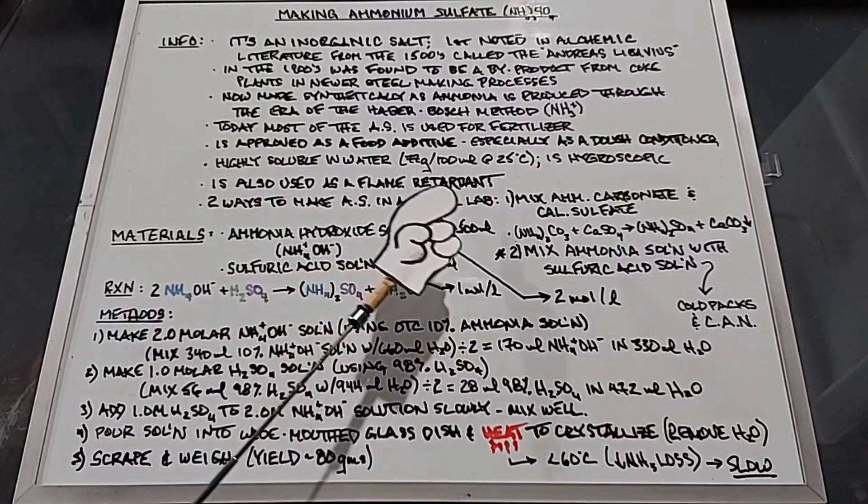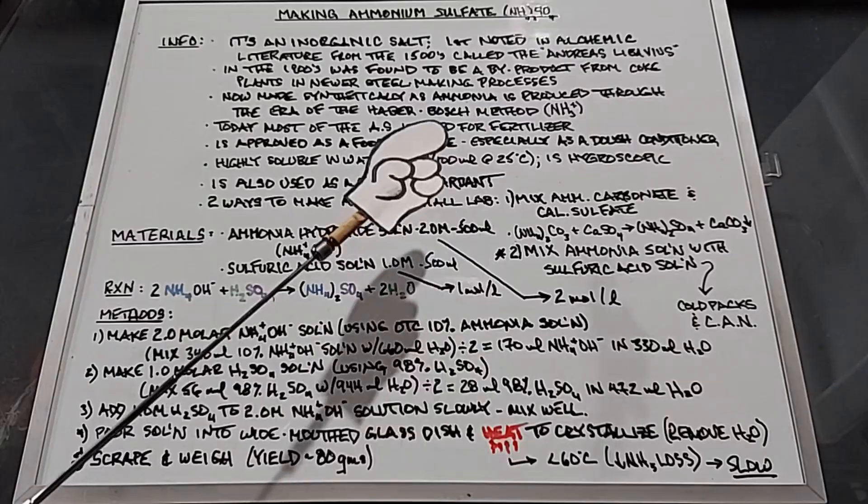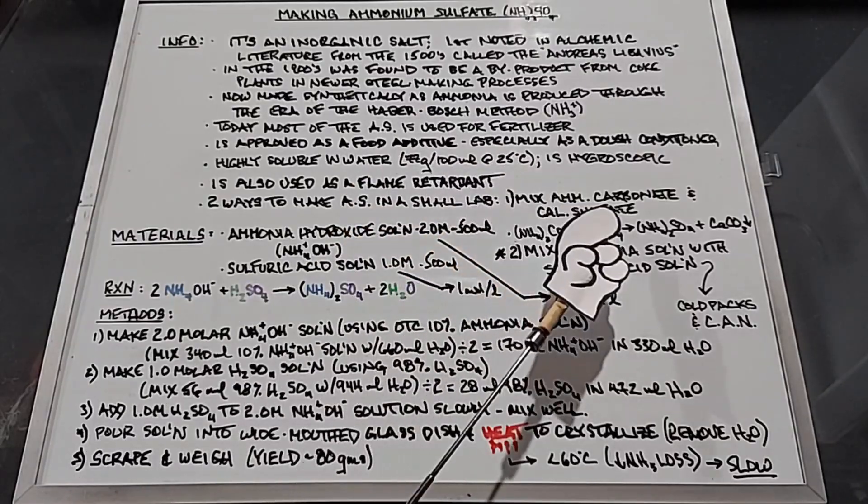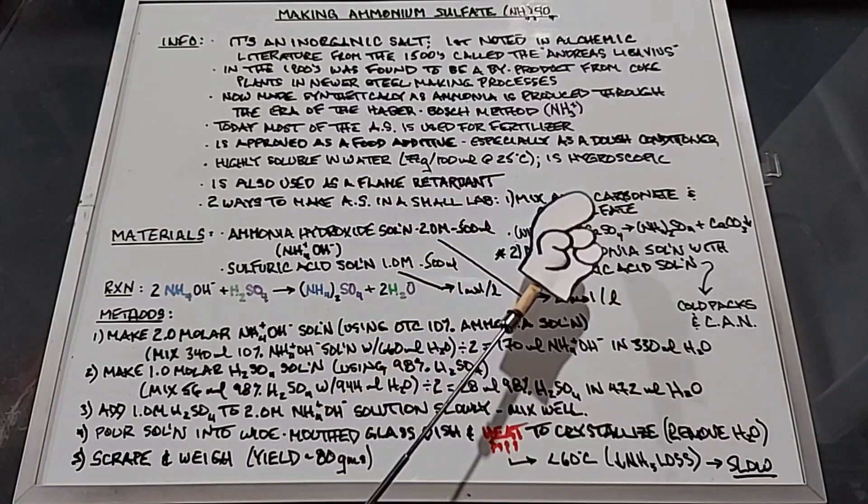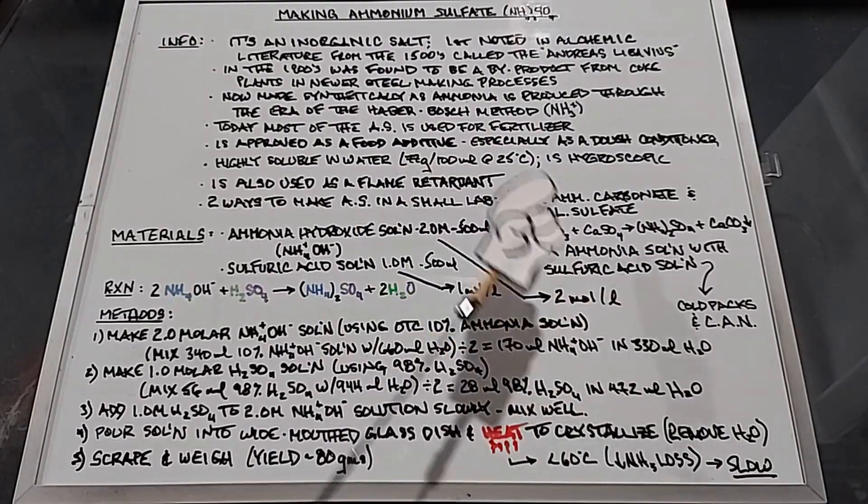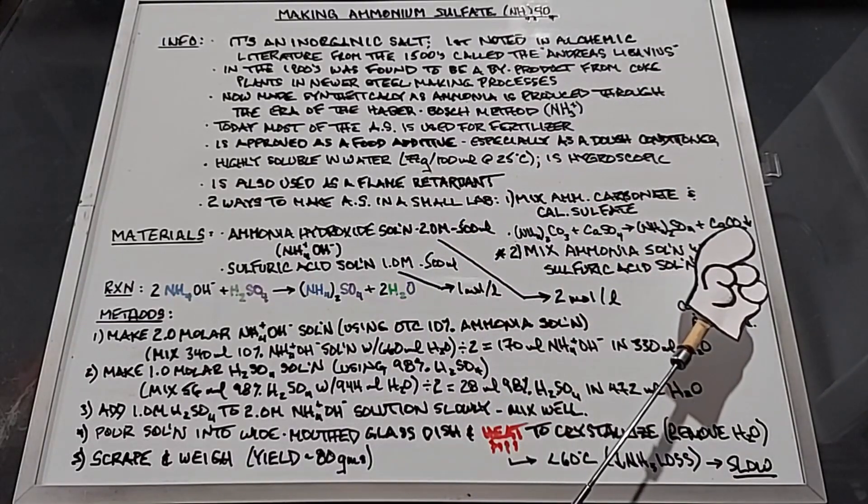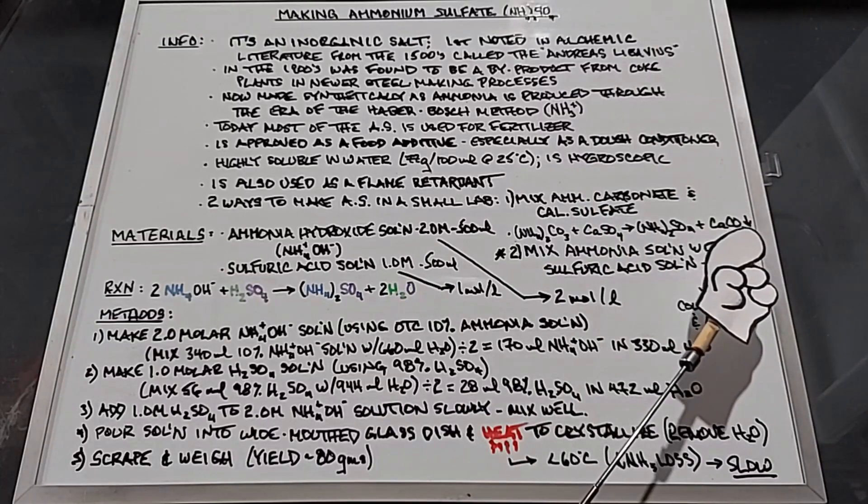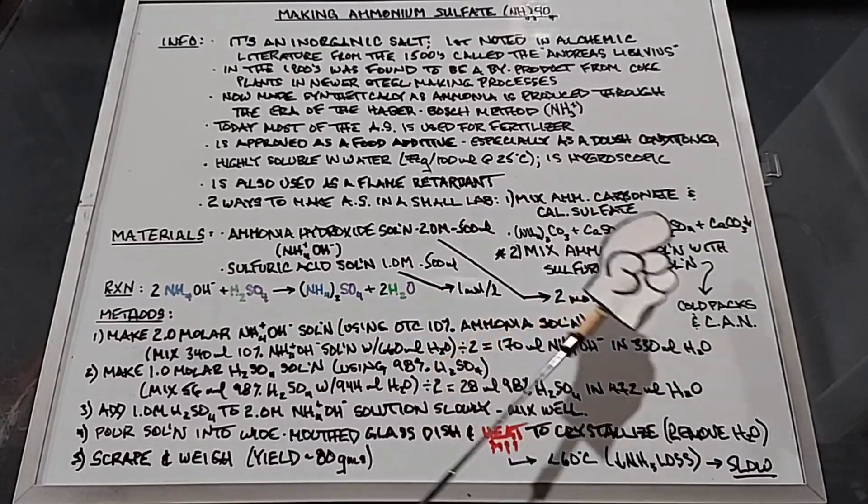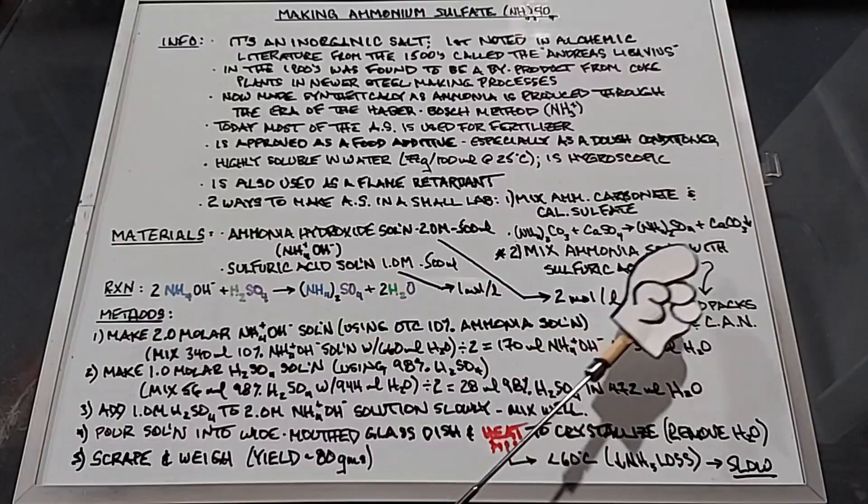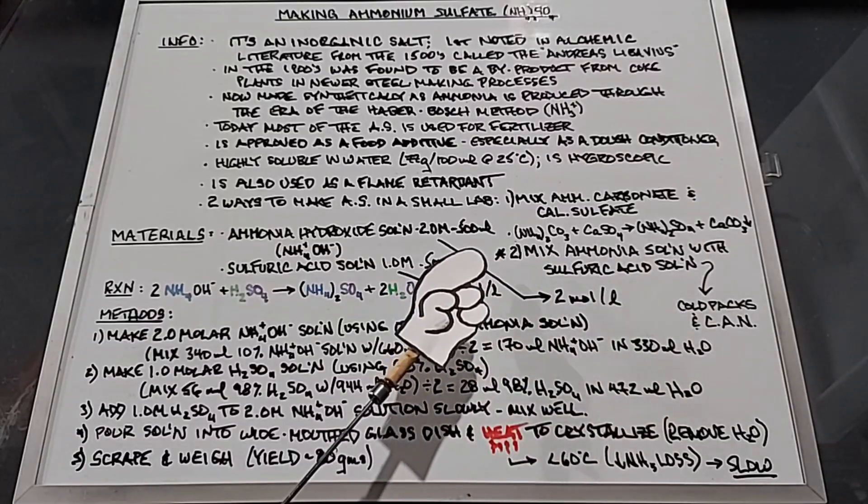Finally there are two ways to make ammonium sulfate in a small lab. The first one is to mix ammonium carbonate and calcium sulfate, which gives you the ammonium sulfate and the calcium carbonate which is insoluble and falls out of solution. The second way is to mix an ammonia solution with a sulfuric acid solution, and that's the method I'm going to be using today.